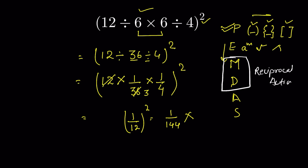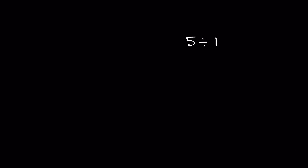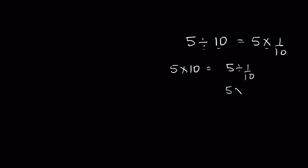For example, 5 divided by 10 is equal to 5 multiplied by 1/10, because division gets converted into multiplication and the number gets inverted — reciprocal of 10 is 1/10. Similarly, 5 times 10 can be written as 5 divided by 1/10, because division converts to multiplication and the number after gets inverted. So they have equal priority.